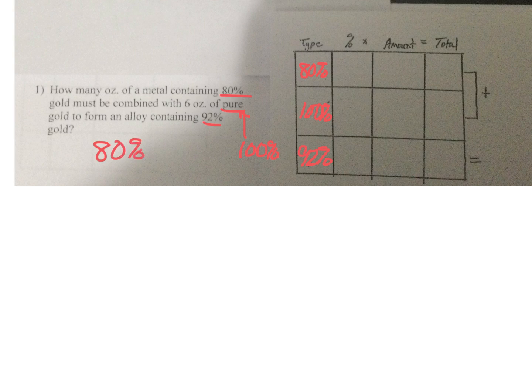Since we are dealing with percentages, one thing we need to do is always change our percent to a decimal. Percent means there are two decimal places, so we move our two decimals to the left. This means 80% is 0.8, 100% is 1, and 92% is 0.92.